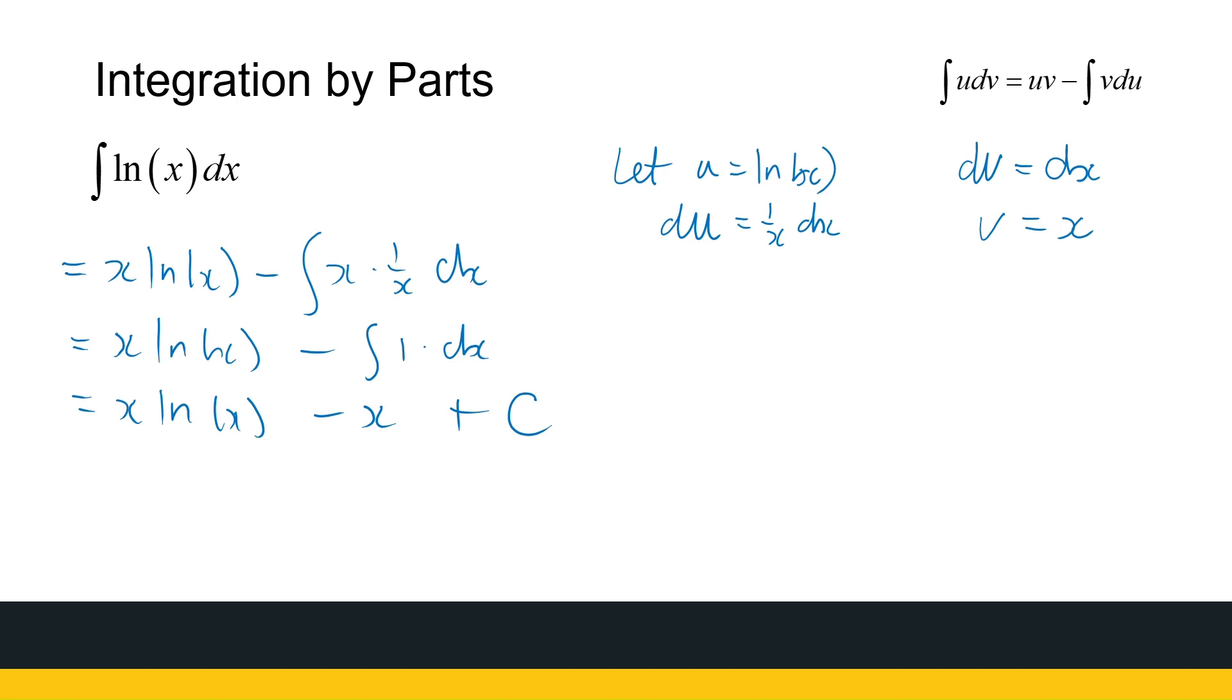Now remember, you can use differentiation to test your answer. Differentiate this final answer. If you differentiate x ln(x) minus x plus c, you should get ln(x) back. You can do that with all your integration examples. You can find the derivative and check that you've got it right. So that is using integration by parts to find the antiderivative of ln(x).